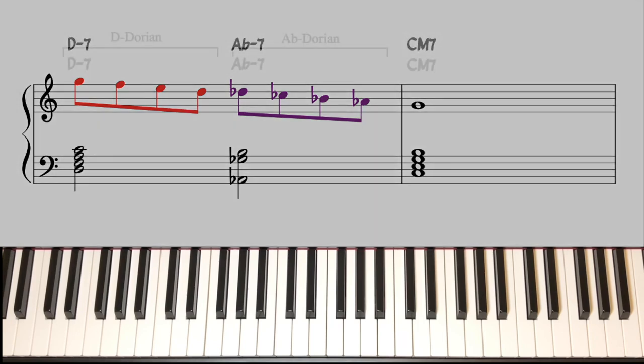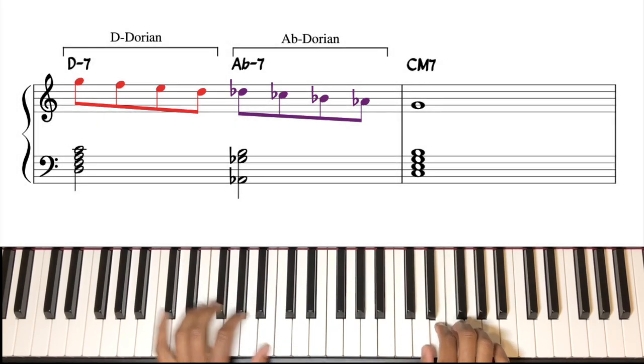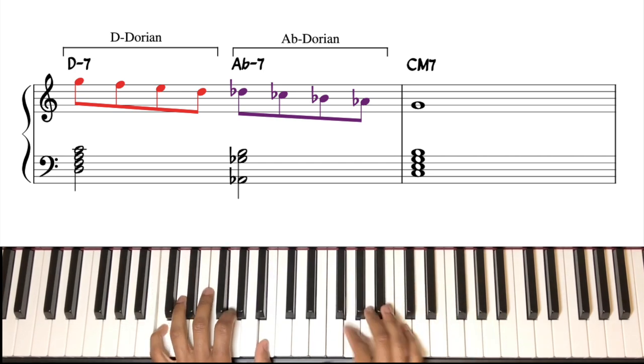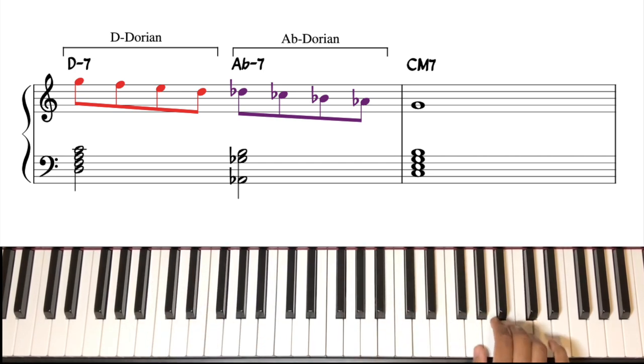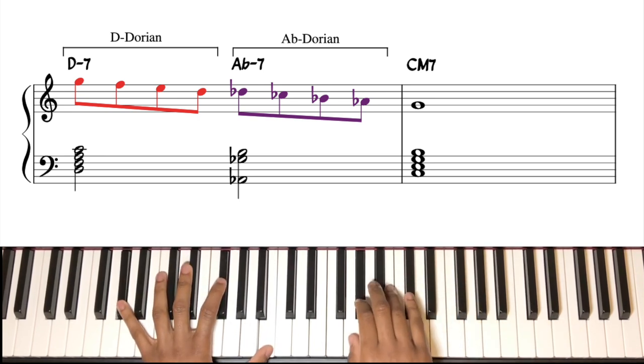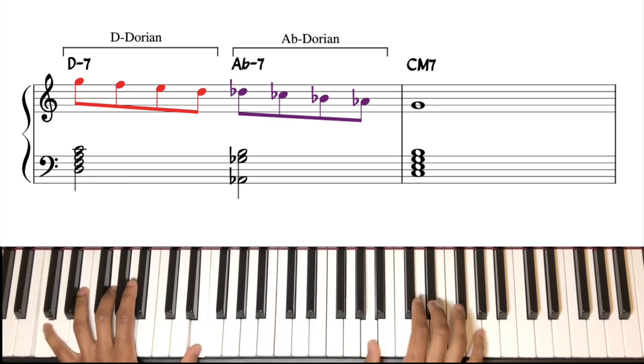Here's a line in the Dorian mode. So D Dorian, and then A-flat Dorian, resolving to C.